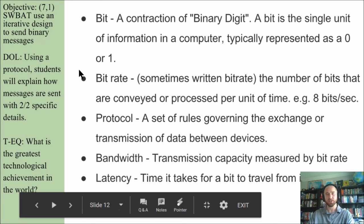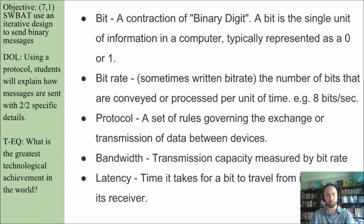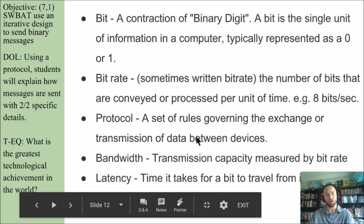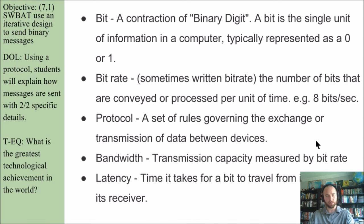A bit is a contraction of binary digit — it is the single unit of information in a computer, typically representing a zero or one. Bit rate, sometimes written as one word, is the number of bits conveyed or processed per unit of time, such as eight bits per second. Protocol is a set of rules governing the exchange or transmission of data between devices. Bandwidth is transmission capacity measured by bit rate, and latency is the time it takes for a bit to travel from its sender to its receiver.